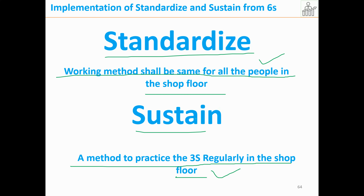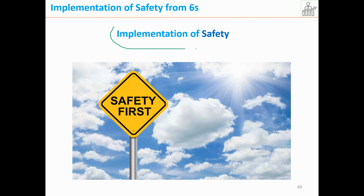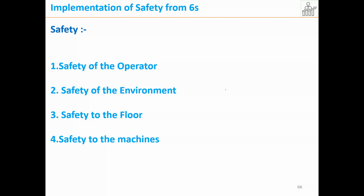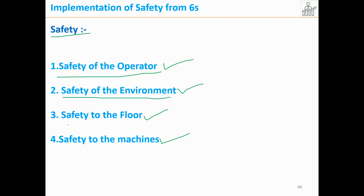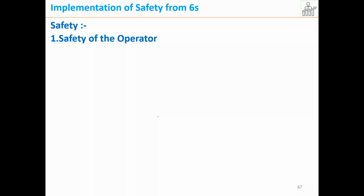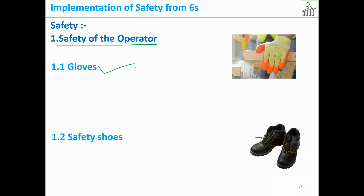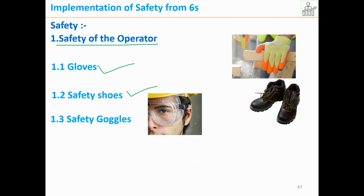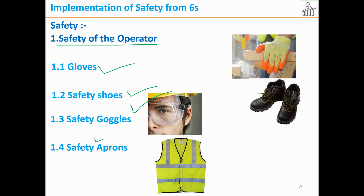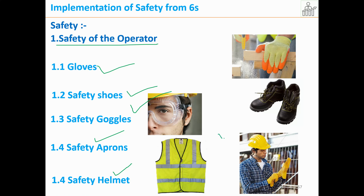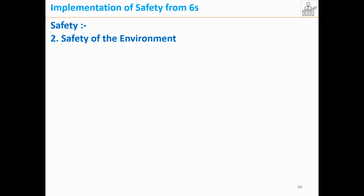Next is the implementation of Safety. The safety of the operator is very important, as well as safety of the environment, safety to the floor, and safety to the machines. For operators, safety items include gloves, safety shoes, safety goggles, safety aprons, and safety helmets.